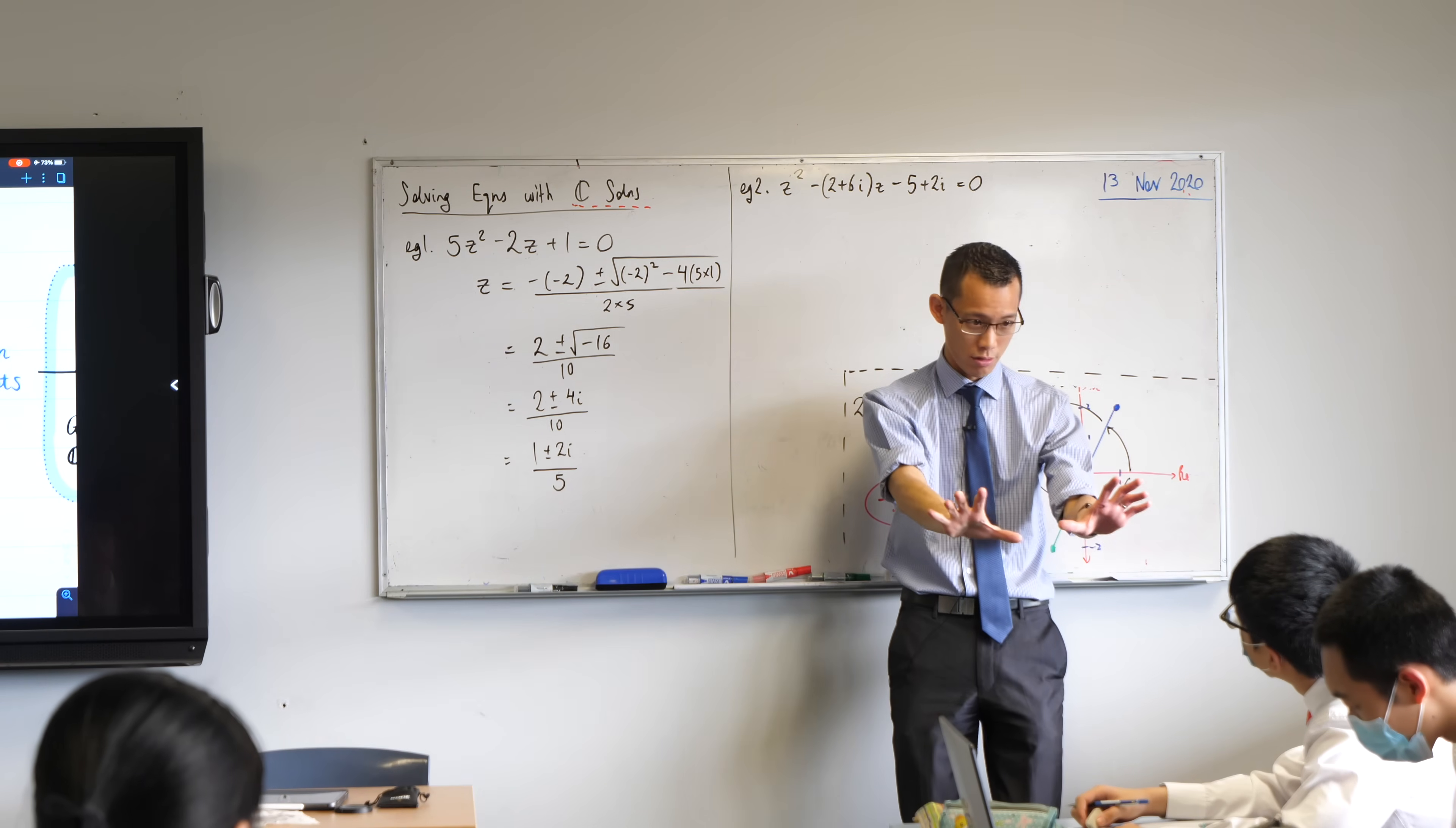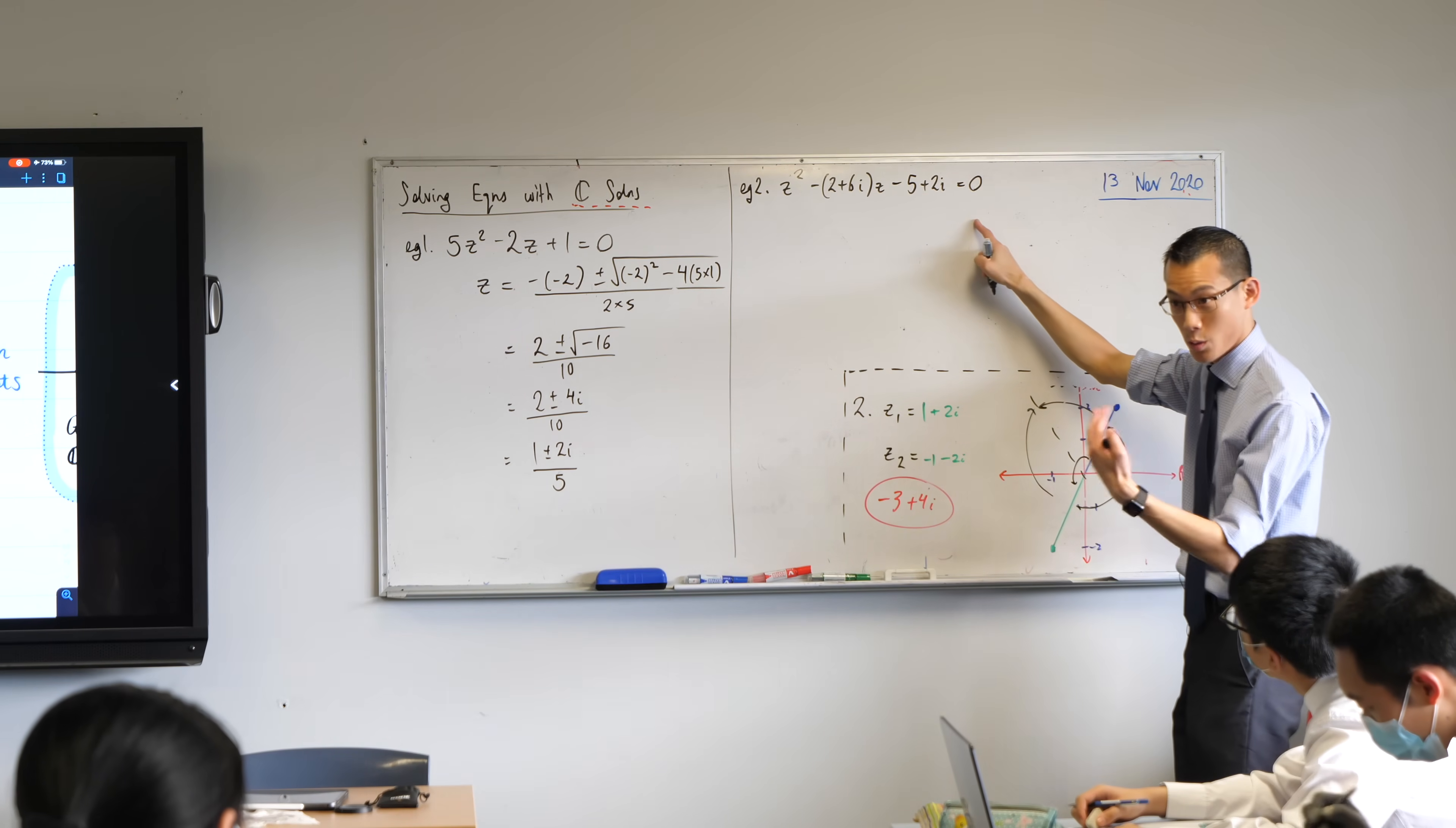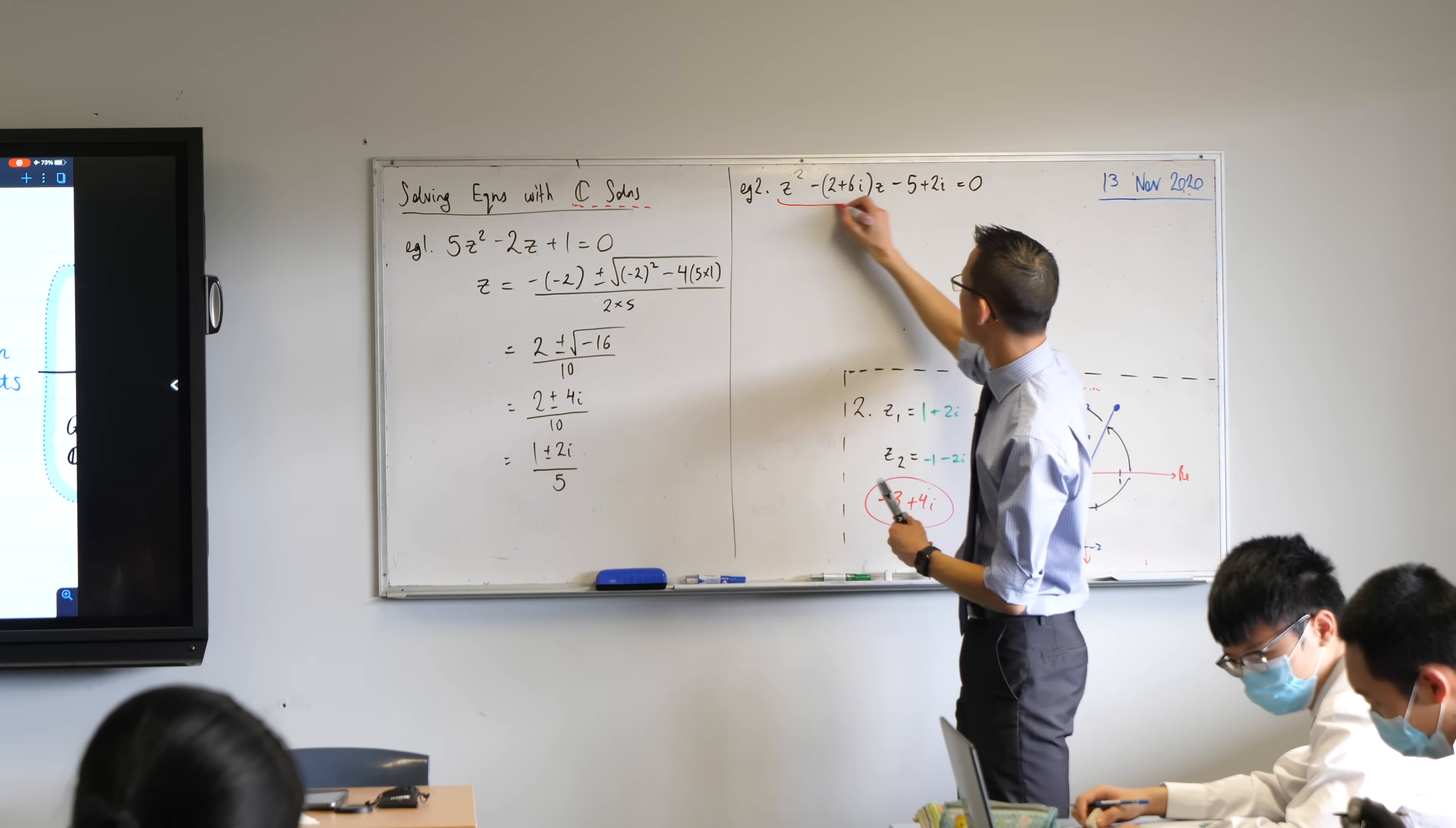Now, what I'm going to encourage you to do, and you'll see why as we progress through the question, when you have complex coefficients, completing the square turns out to be probably a nicer, neater way to set it out than the quadratic formula. You'll arrive at the same solution, okay? But let's have a go at this, okay?